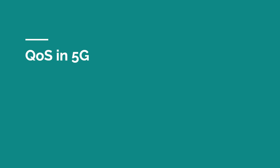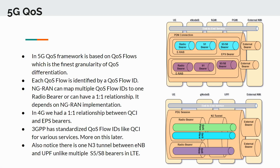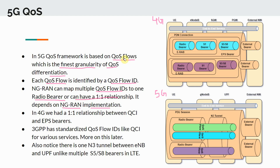In this section we will talk about QoS in 5G, or quality of service in 5G, and how it is implemented. In 5G, the QoS framework is based on QoS flows, which is the finest granularity of QoS differentiation. Each QoS flow is identified by a QoS flow ID. The NG-RAN can map multiple QoS flow IDs to one radio bearer, or can have a one-to-one relationship — it depends on the NG-RAN implementation.